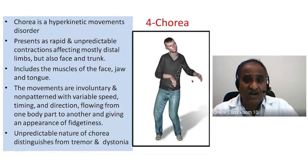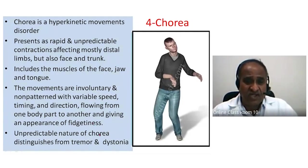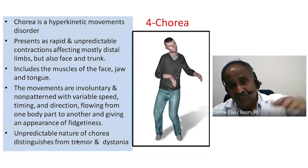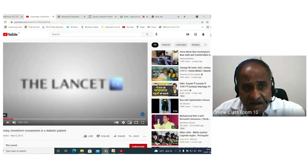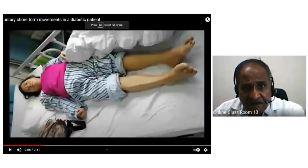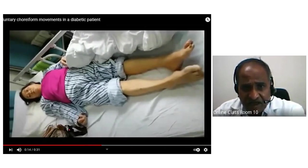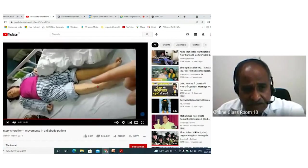The unpredictable nature of chorea distinguishes it from tremor and dystonia. Dystonia involves a painful spasmodic contraction of muscle; tremor involves oscillations. Let me show you some choreic motions — you can see the limbs moving involuntarily. These are choreic motions in an individual with movement of the limb that the patient cannot control.